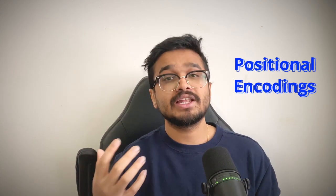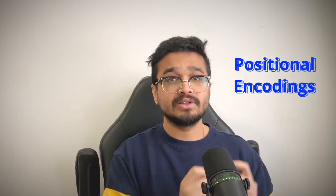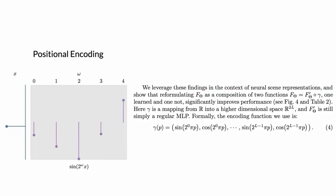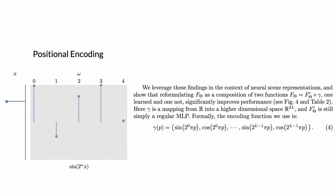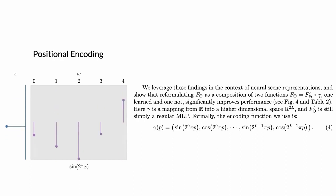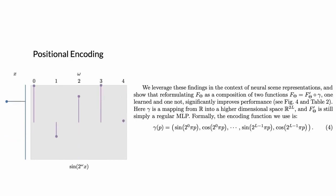Another important trick that NERF does is instead of directly passing in the input coordinates as float values into the network, NERF trains positional encodings that map those coordinates into high-dimensional, high-frequency vectors. They derive these encodings using combinations of sine and cosine waves, very similar to how positional encodings work in transformer papers if you are familiar with them.